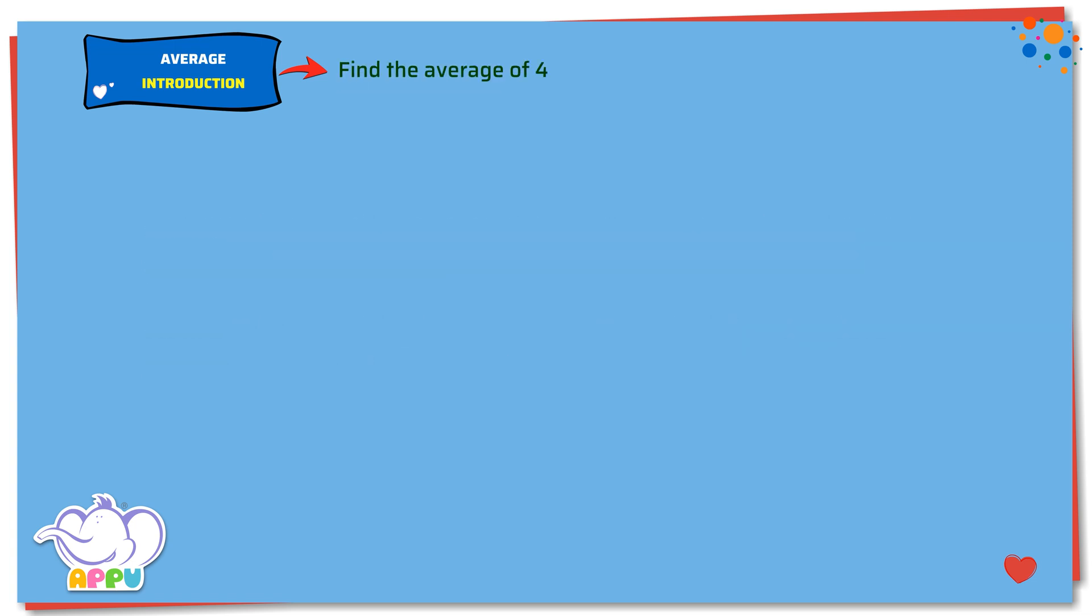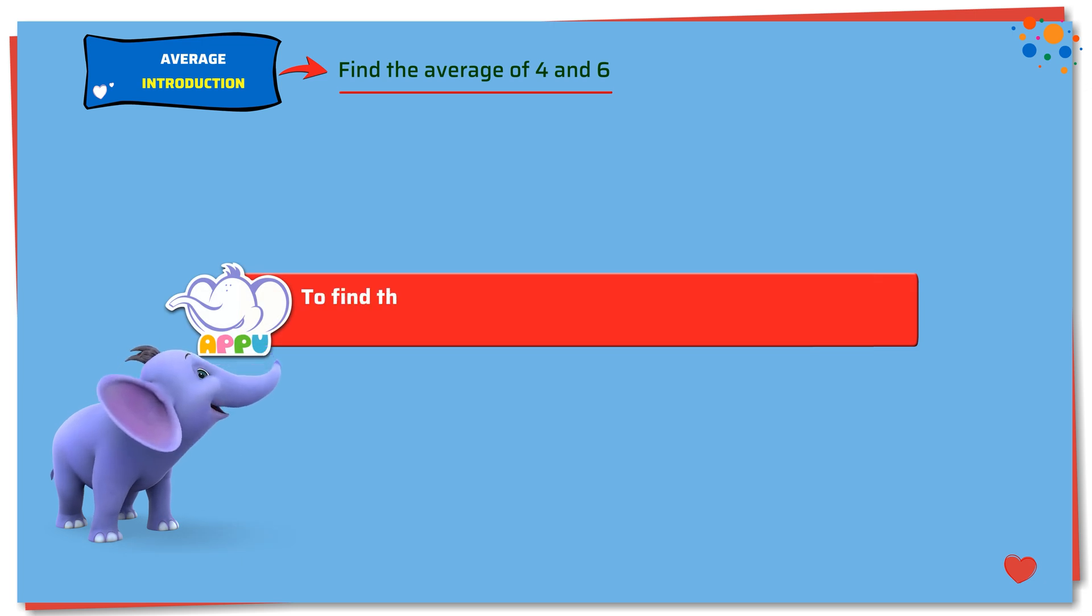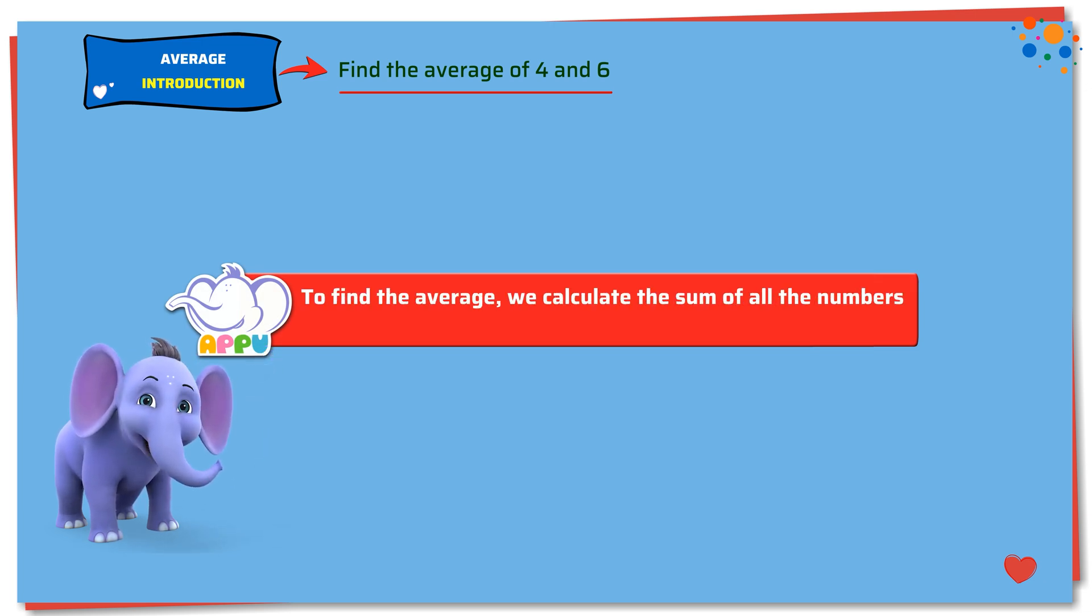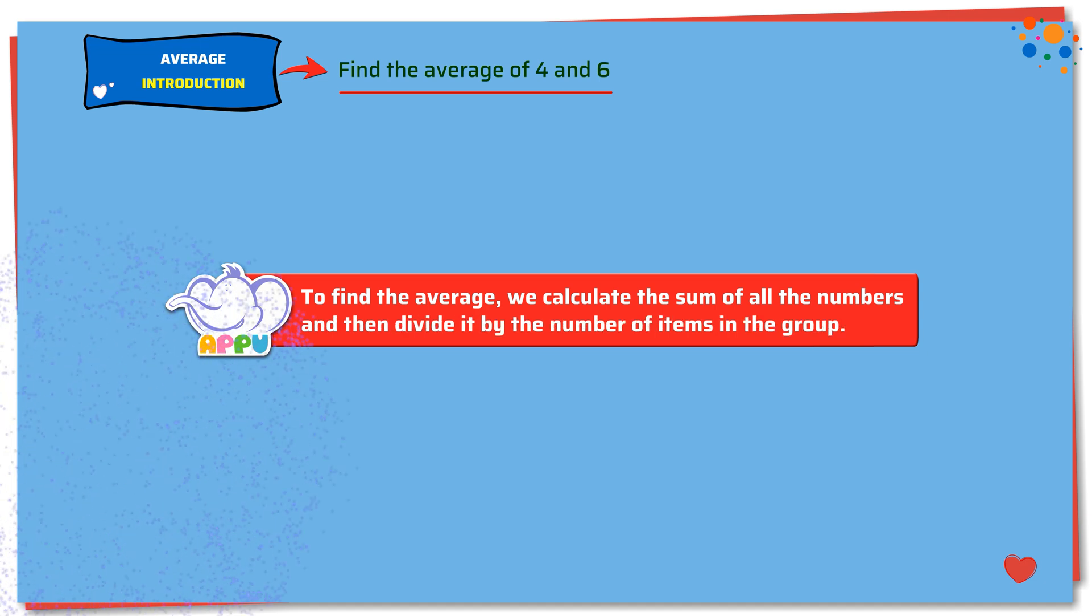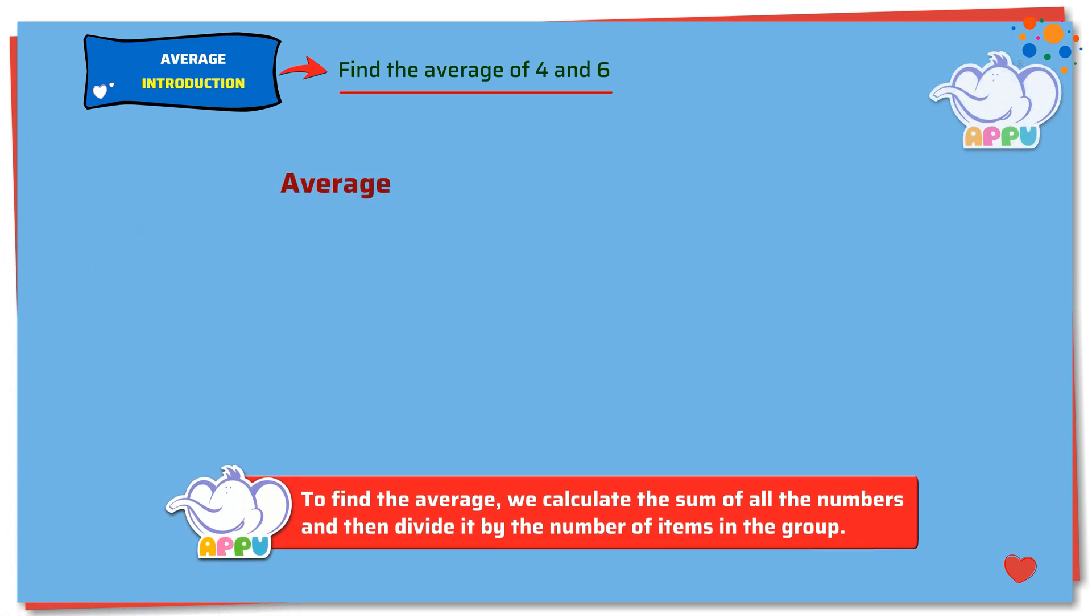Find the average of 4 and 6. To find the average, we calculate the sum of all the numbers and then divide it by the number of items in the group. Average equals sum of all the numbers divided by number of items in the group.